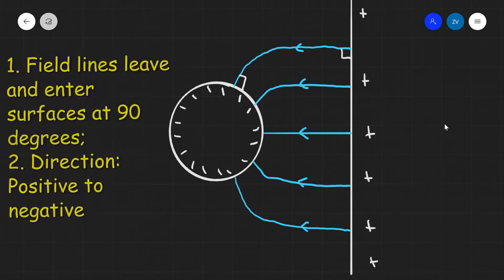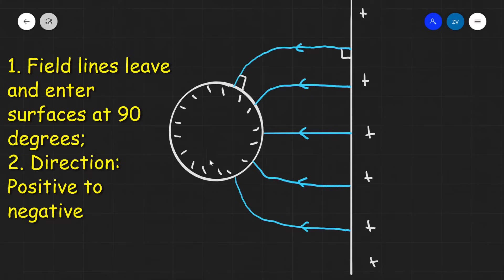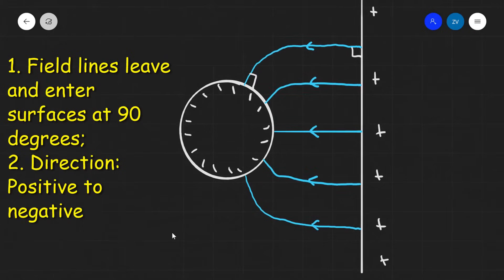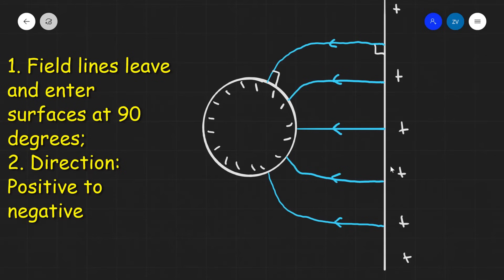One more pattern to revise is that of a charged sphere next to a charged plate or wall. In this case we have a positively charged plate and a negatively charged sphere. The field lines go from positive to negative and leave the plate surface at 90 degrees, also entering the sphere's surface at 90 degrees.